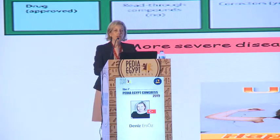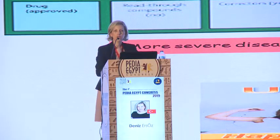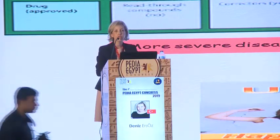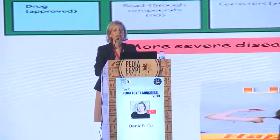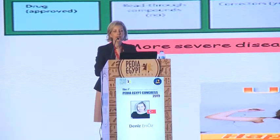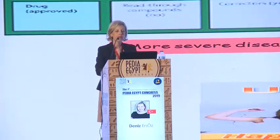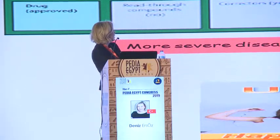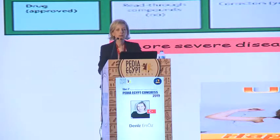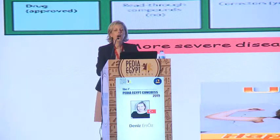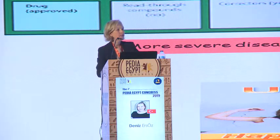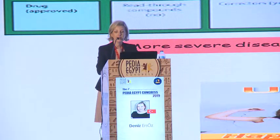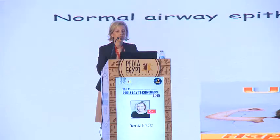There are more than 2,000 mutations, classified into five groups — and more recently, group five and six mutations have been defined. Patients who have class one, two, and three mutations are considered to have a more severe phenotype. However, patients with group four, five, and six mutations are considered to have a less severe phenotype.